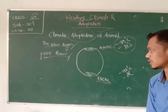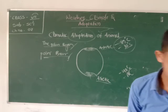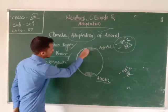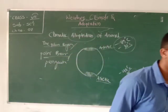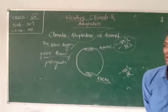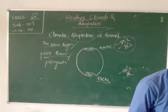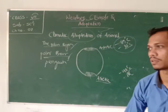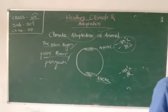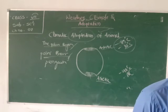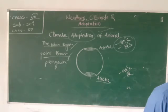Another animal in the polar region is the penguin. The penguin also lives in the Arctic and polar regions. The penguin belongs to the family of birds but does not have the capability to fly. It has developed the ability to swim inside the water for a longer distance and for a longer time. Most penguins live in the Antarctic and also along the southern coasts of Africa, Australia, and around New Zealand.